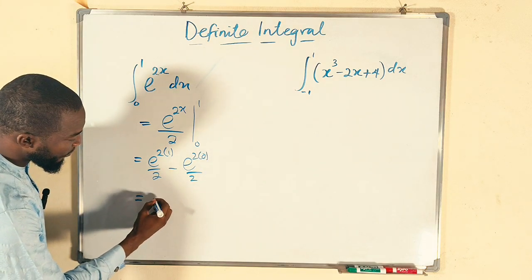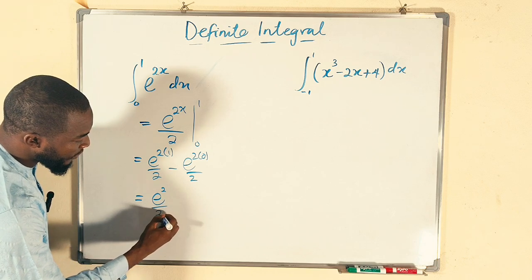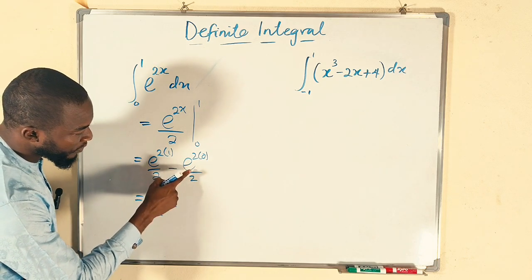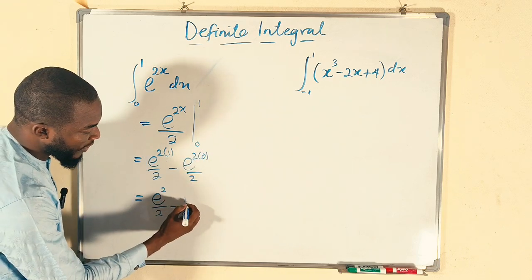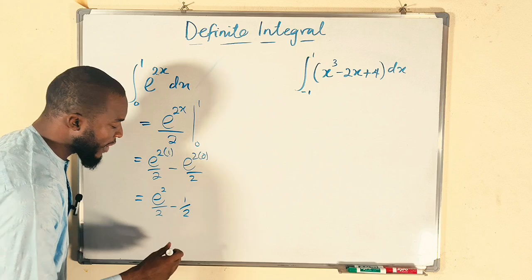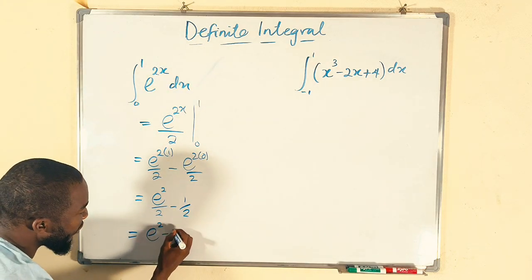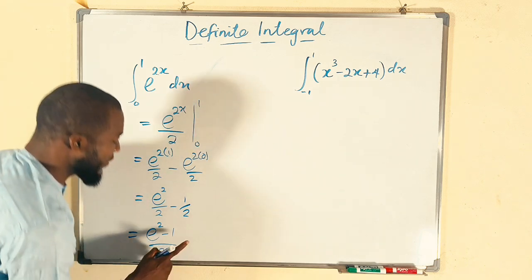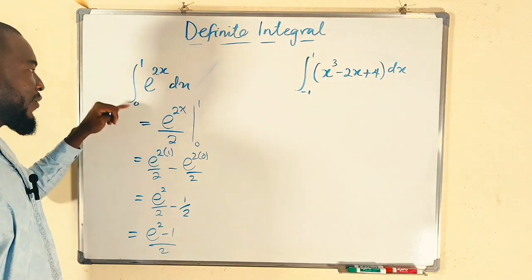This is equal to e to the power of 2 divide by 2 minus 2 times 0 is 0, then e to the 0 is 1. So we have 1 divide by 2. If you like, you join them together. We have e to the power of 2 minus 1 divide by 2. And hence, this is the area under the curve e to the 2x from 0 to 1.